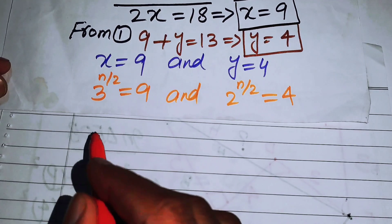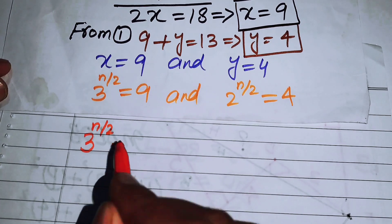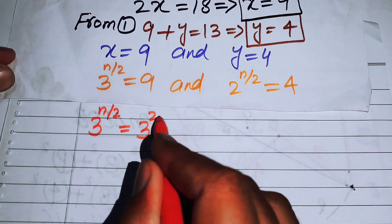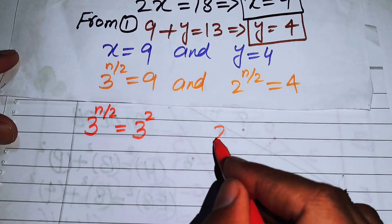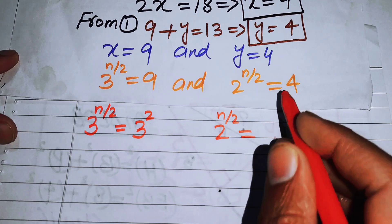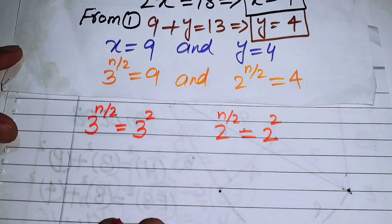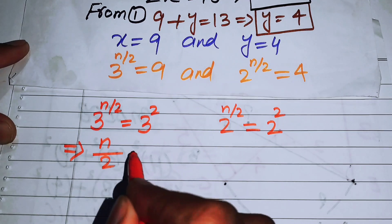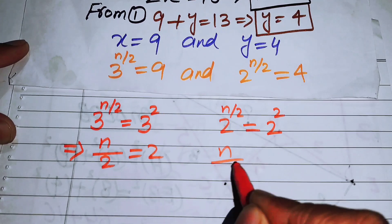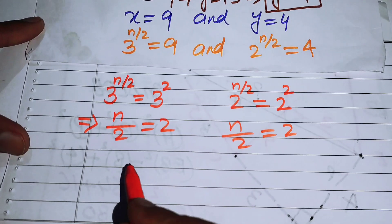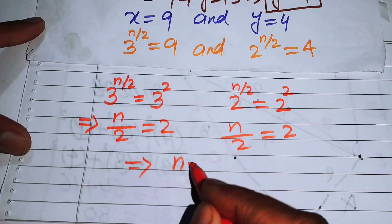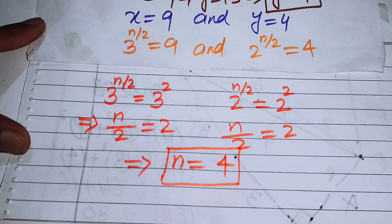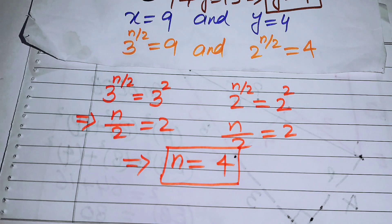Focusing on both equations: 3 to the power of n over 2 equals 9, which we write as 3 squared. Similarly, 2 to the power of n over 2 equals 4, which is 2 squared. Comparing both sides, in both cases we get n over 2 equals 2, which gives n equals 4. This is our final answer. Thank you so much for watching — please subscribe to my channel for more exciting videos.